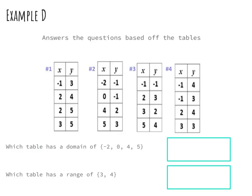Now let's move on to Example D — a multiple choice question. We need to find which table has the domain of {-2, 0, 4, 5}. Since domain means x values, we check the first column of each table. Table 1 has -1, 2, 3 — not what we need. Table 2 has -2, 0, 4, and 5 — yes, that matches. Table 3 only shares one value. Table 4 doesn't match either. So the answer for the domain question is table number 2.